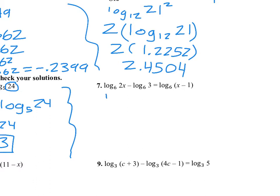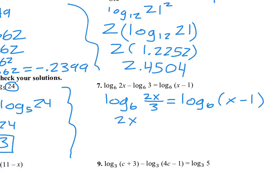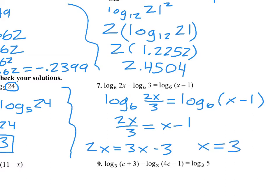For number 7 we're going to use the quotient rule. Both logs have base 6, so we can divide the arguments. Now that the logs have the same base, we know their arguments have to equal each other. So 2x equals 3x minus 3, which means x equals 3. Checking our answer: plugging in 3 gives a positive argument for both logs, so x equals 3 is valid.